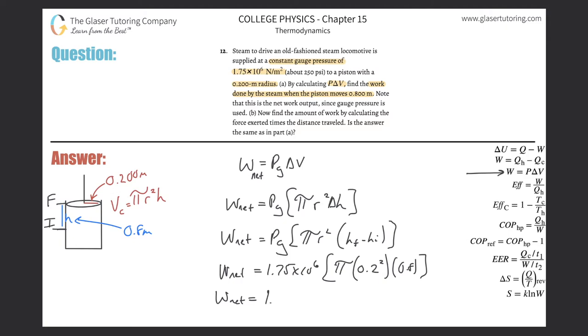So we have 1.75 times 10 to the sixth times pi multiplied by 0.2 squared multiplied by 0.8. So we get the network being done by this engine here is going to be 1.76 times 10 raised to the five, and that is in terms of joules. So there you go, that takes care of that.